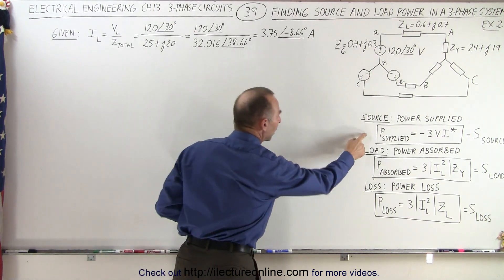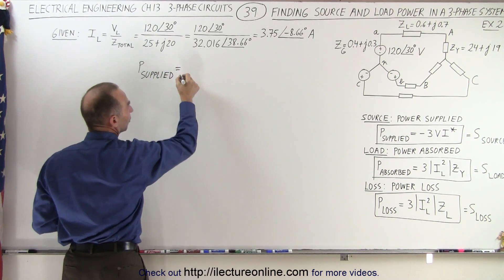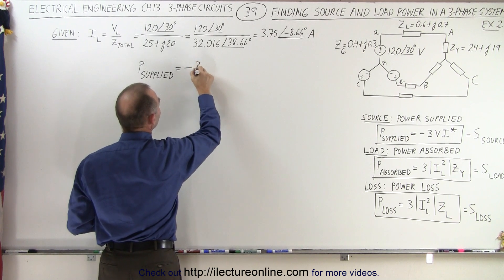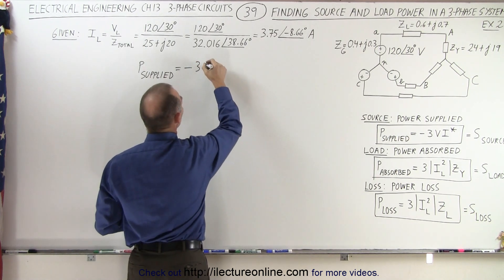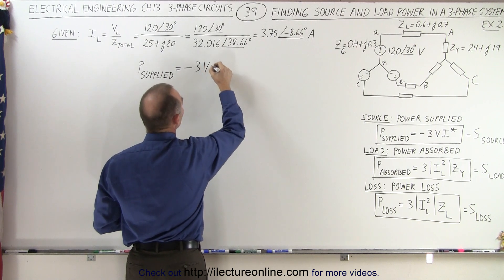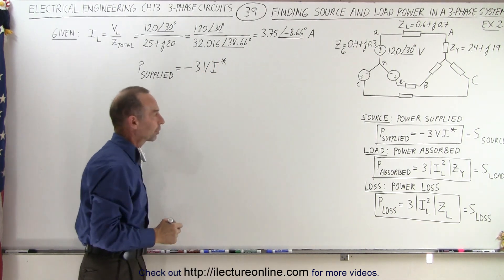So let's now calculate the power supplied. Notice that's going to be negative three times because we have three phases times the voltage times the current and, of course, we need to take the complex conjugate of the current.